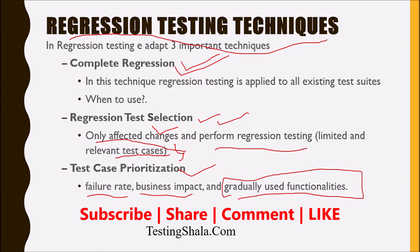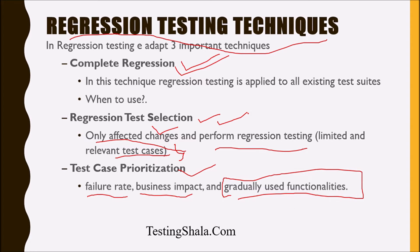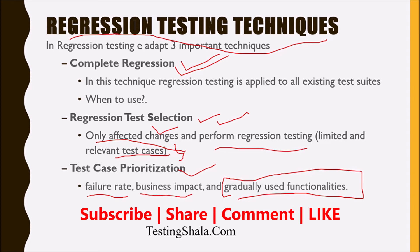The third important technique is test cases prioritized based on the failure rate, which gives us history from our previous runs. Business impact on certain functionality and frequently used features also need to be run regularly as part of regression testing. I hope you completely get hold of the three types of regression testing techniques.